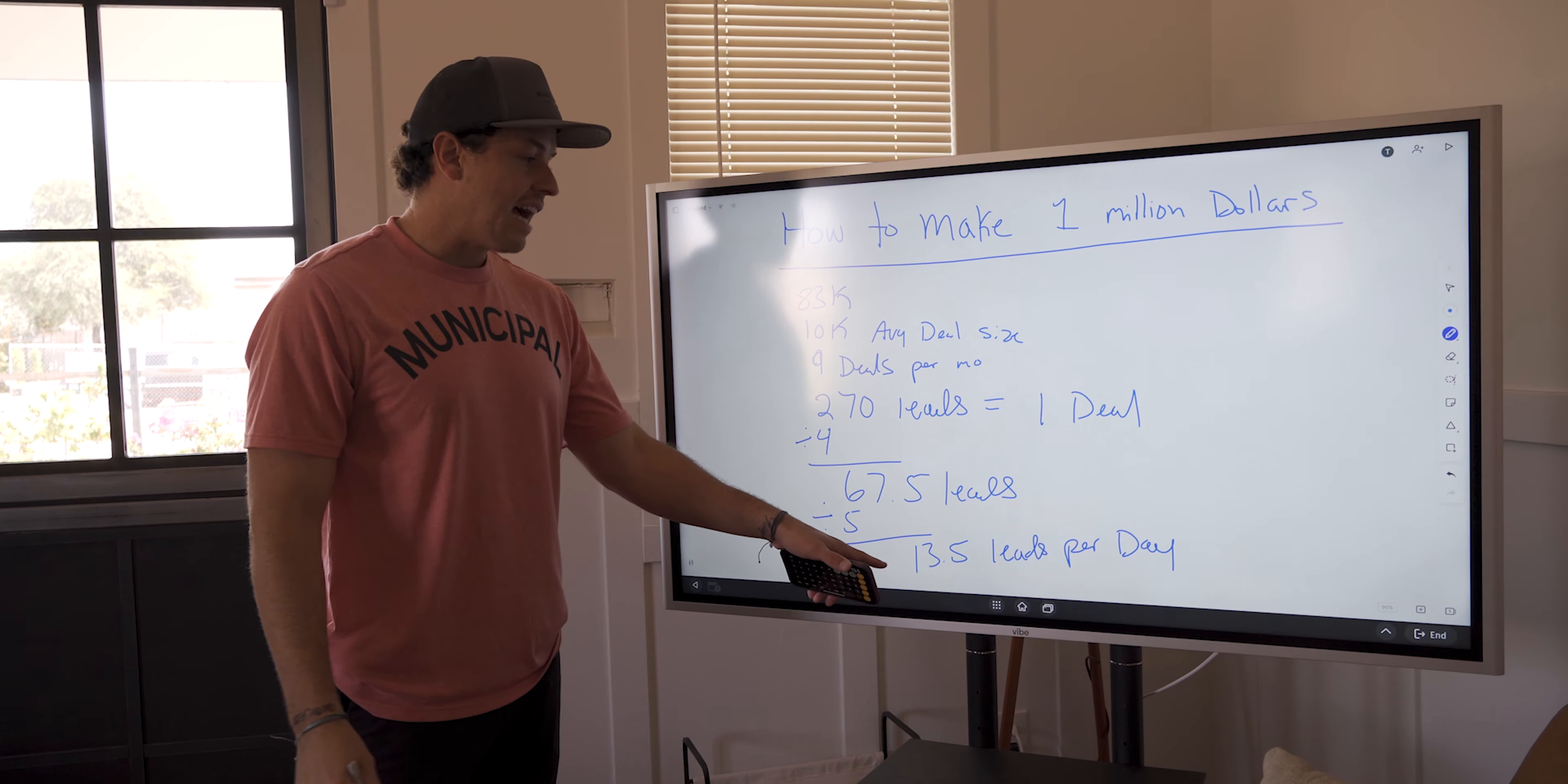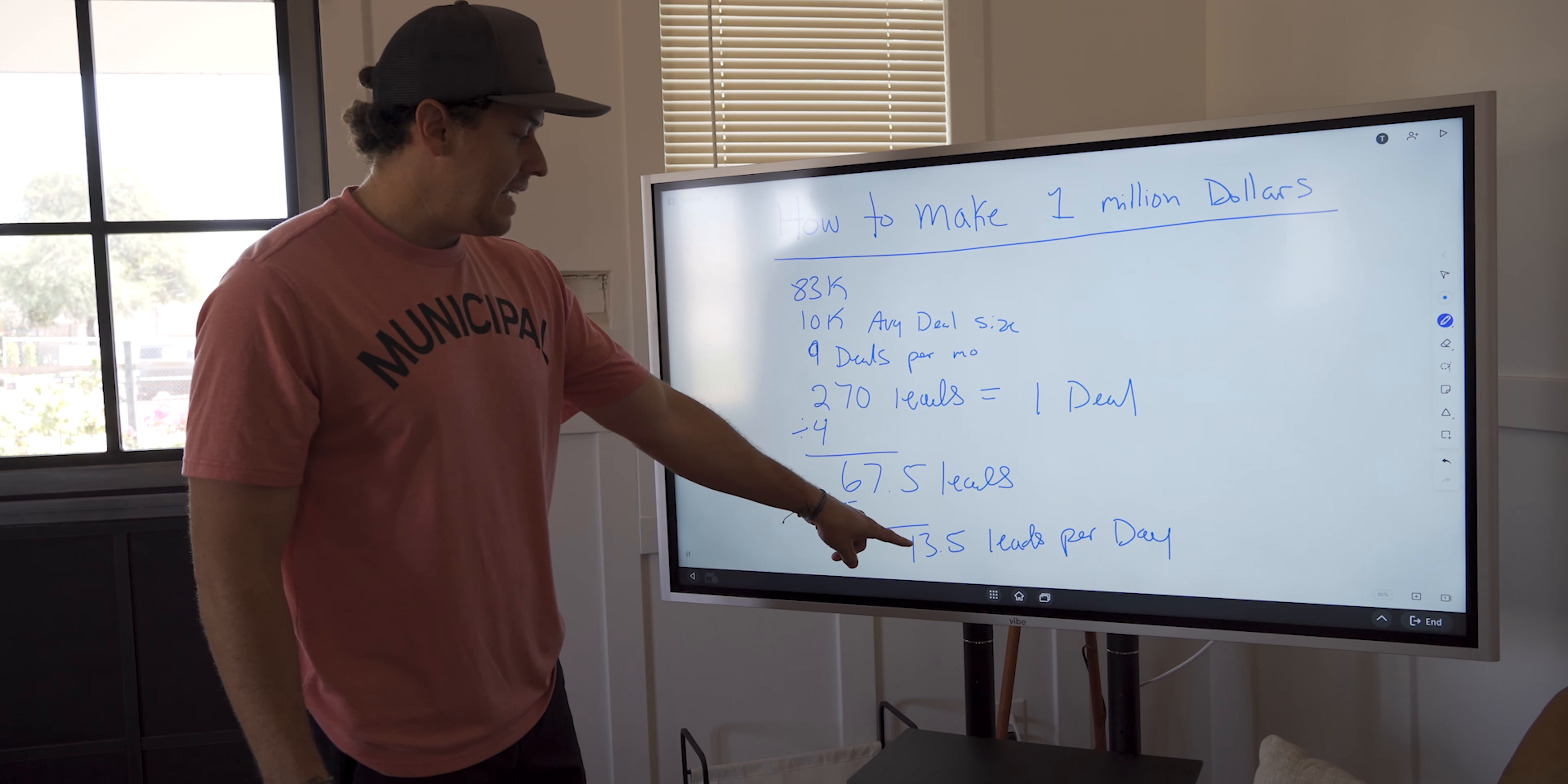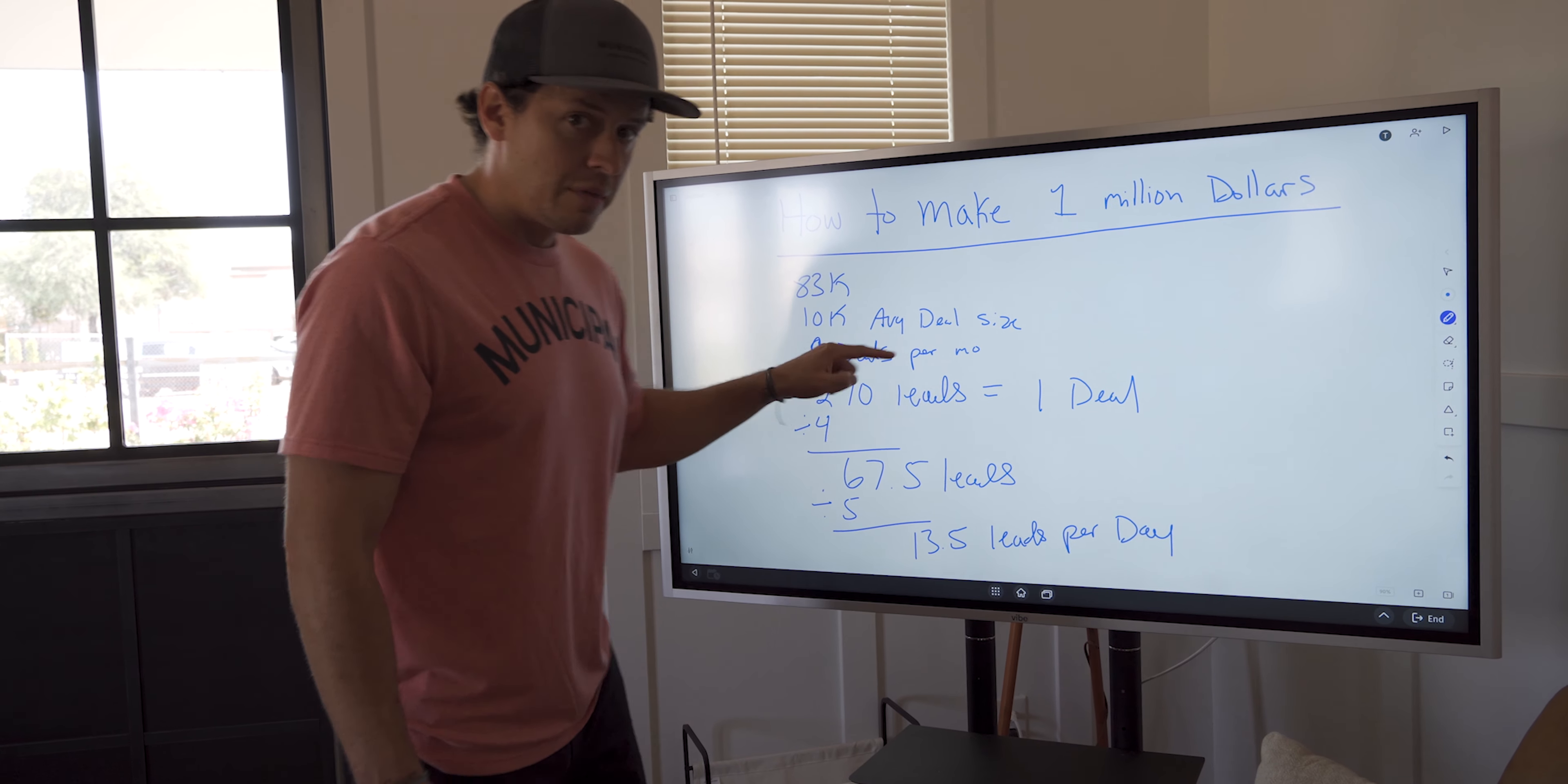Okay, now I can have an actionable plan. I can talk to my sales reps, I can talk to my acquisitions managers. If you're a solopreneur, you can look at yourself and say, you know what, I need to talk to 13.5 people a day. And if I do that, I know I'm going to hit my weekly goal and then my monthly goal and my lag measure.